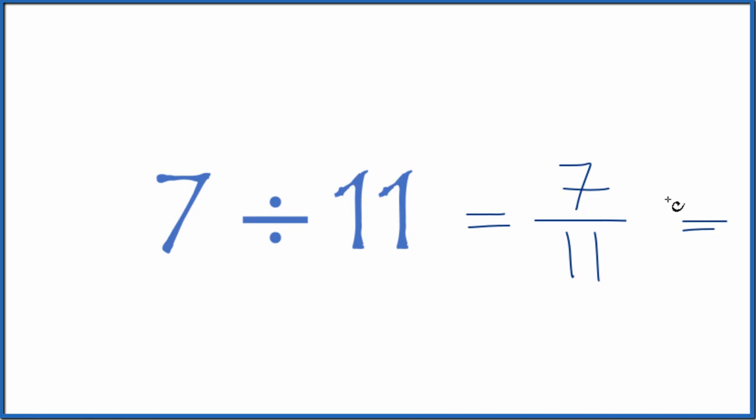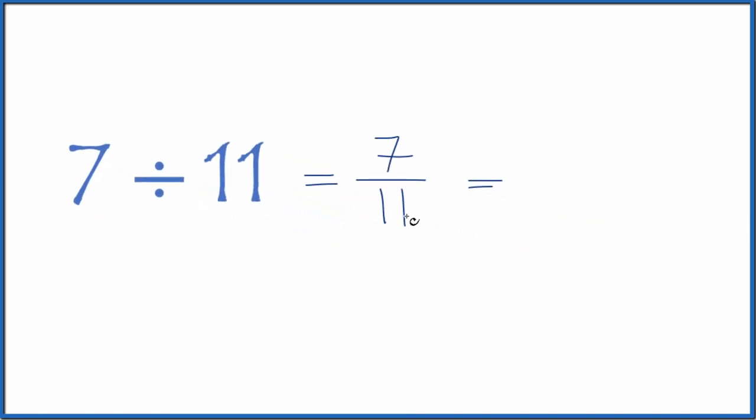So 7 divided by 11, you end up with 0.6363 and it just keeps going 6363. Let's put a bar over this to show that the 63 repeats. So 7 divided by 11 is equal to the fraction 7 elevenths or the decimal 0.63 and that 63 keeps repeating.